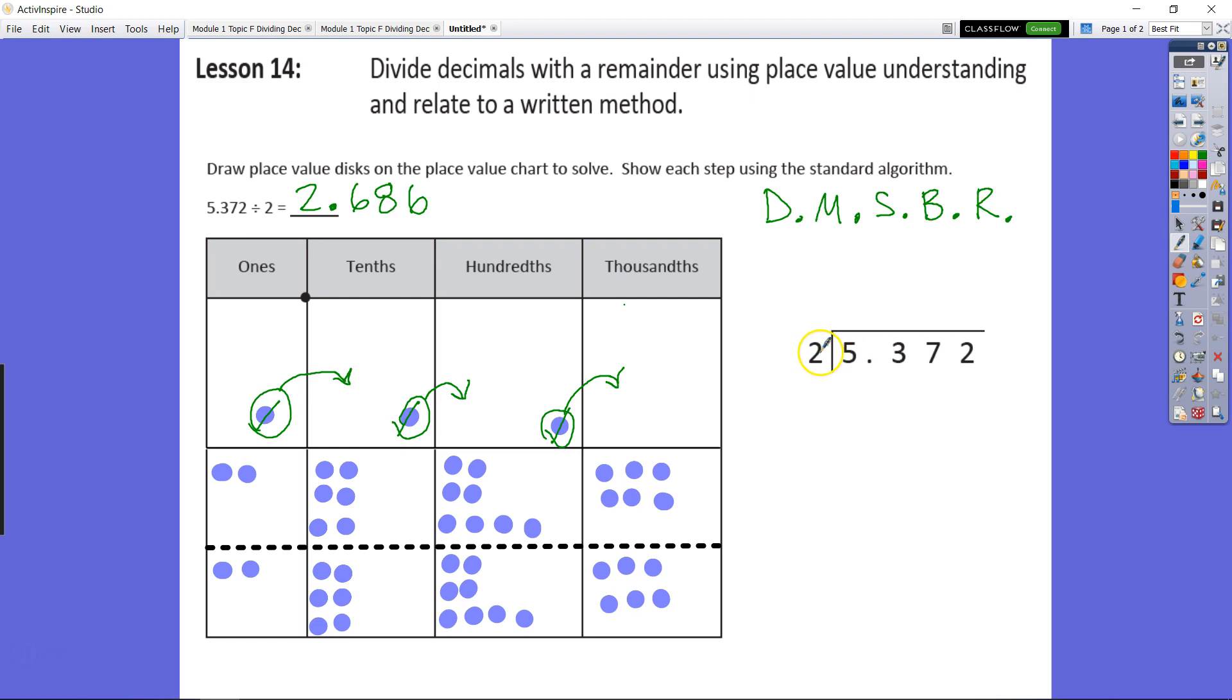First, divide: five divided by two gives us two with one left over. Multiply: two times two equals four. Subtract: five minus four is one. Now bring down the tenths. This is where we regroup, just like we had two in each group. We multiplied to get four total from five, then subtracted to get one.